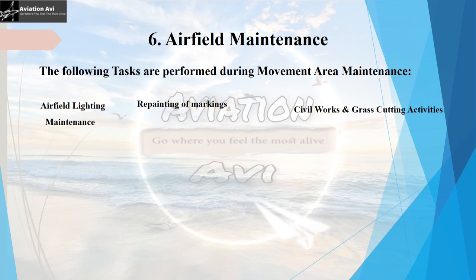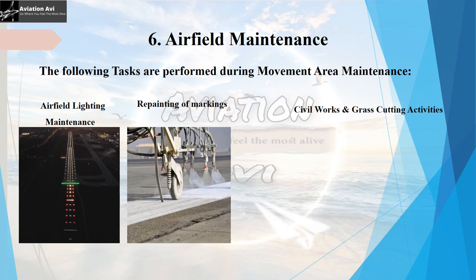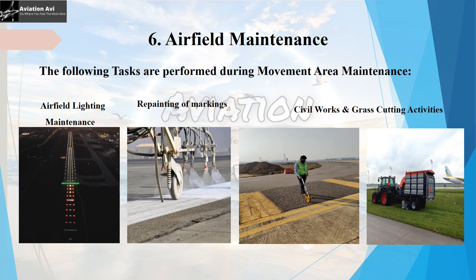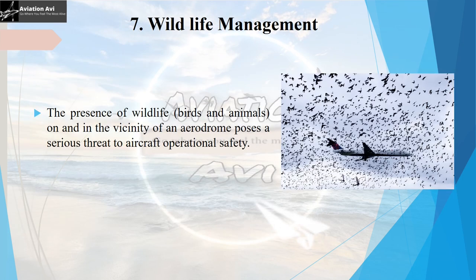The sixth responsibility is airfield maintenance. Tasks performed during movement area maintenance include airfield lighting maintenance, repainting of markings, civil works, and grass cutting activities. Under airfield maintenance is also the maintenance of runway friction characteristics — every landing requires a particular level of friction on the runway surface. Regular friction tests are carried out using specialized devices; when friction falls below a defined minimum, rubber removal and runway sweeping are carried out.